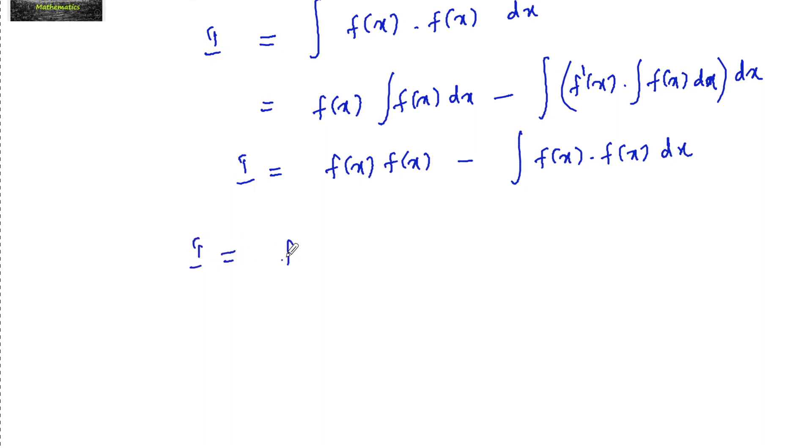So that is i is equal to f whole square minus integration of f whole square dx. Integration of f whole square dx is the same as i only. So we have f square minus i, that is i plus i equals f whole square.